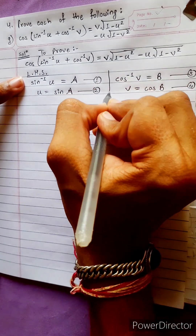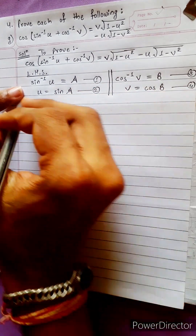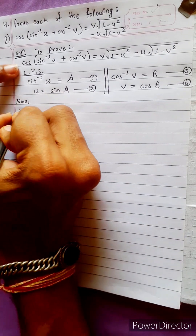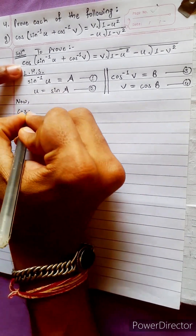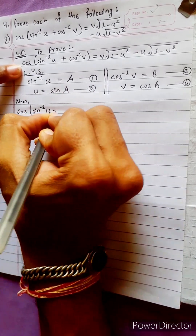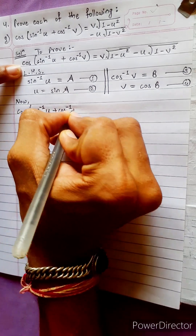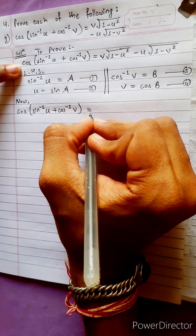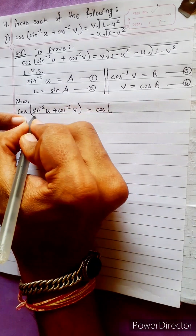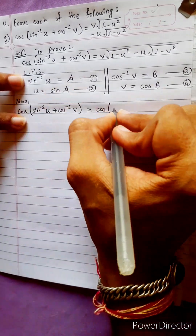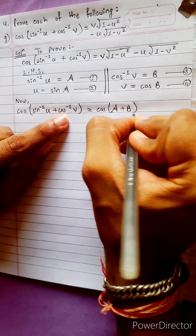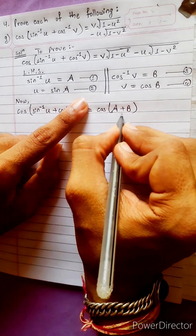We need to find this. Now, our question is: cos of sin inverse u plus cos inverse b, equals 2. We have cos of sin inverse u plus cos inverse b — that is cos(A + B).